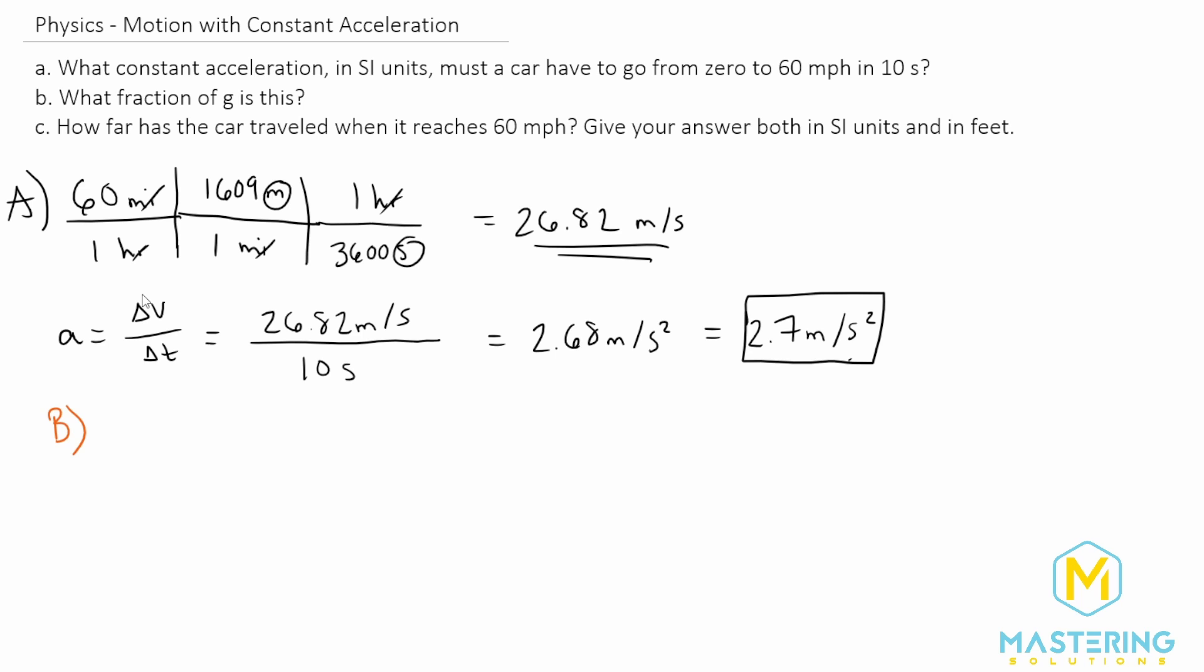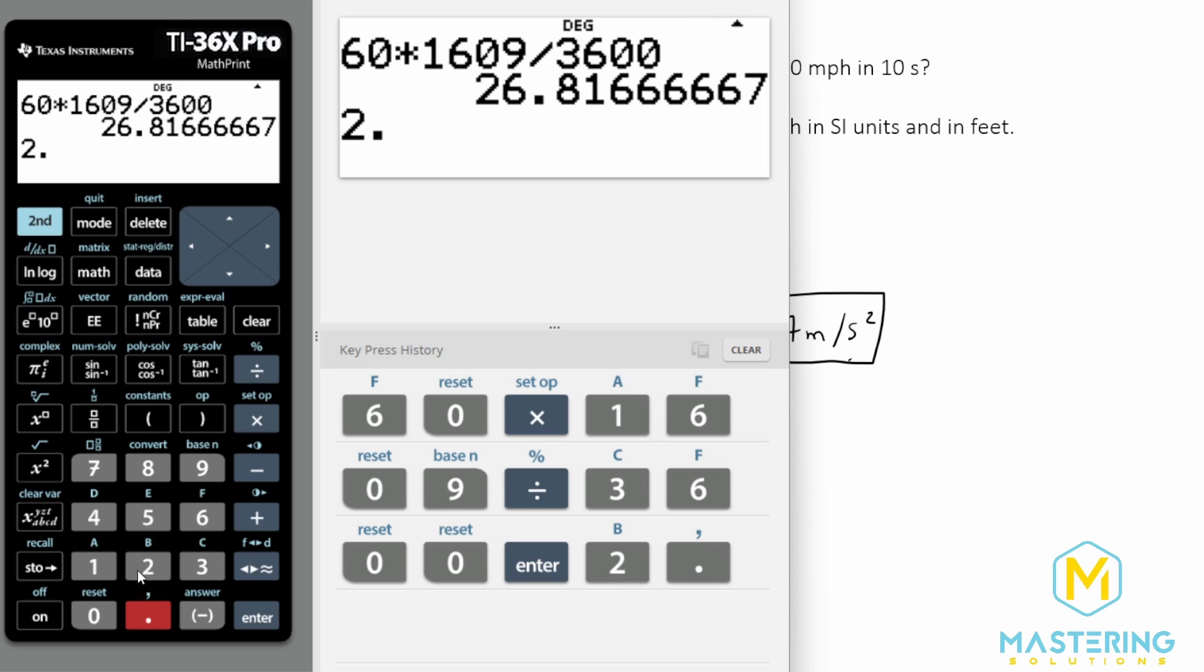For part b they want us to figure out what fraction of g is this. So what we'll be doing is taking that acceleration that we found and dividing it by gravity. So now we have 2.7 meters per second squared divided by 9.8 meters per second squared. The meters per second squared will cancel and we'll be left with a ratio of how much the acceleration is to the gravity.